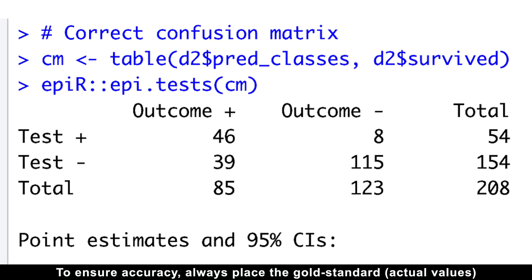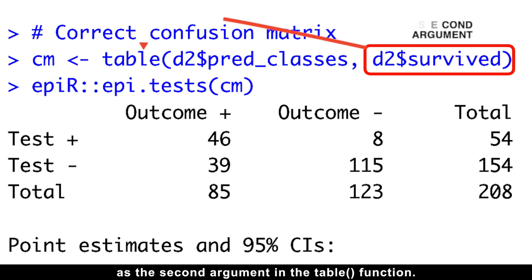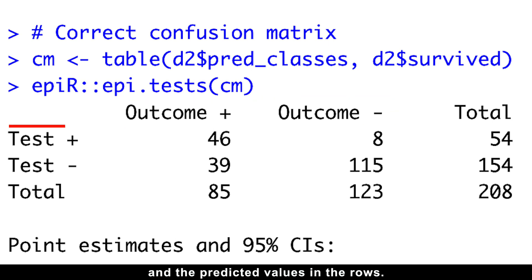To ensure accuracy, always place the gold standard or actual values as the second argument in the table function. This ensures that the actual values appear in the columns and the predicted values in the rows.